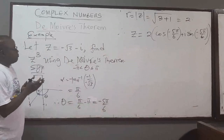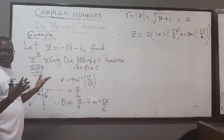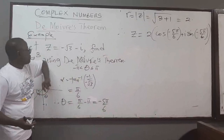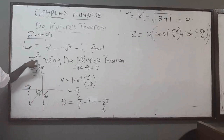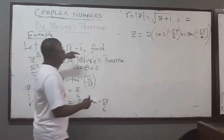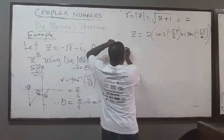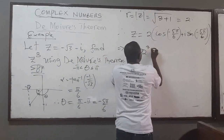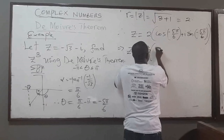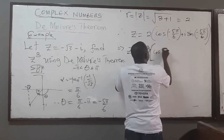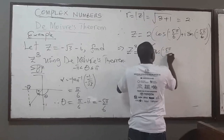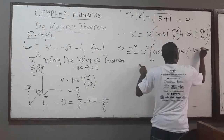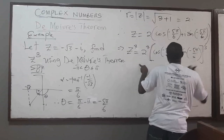We have the complex number in polar form. Now that it's in polar form, we can easily apply De Moivre's theorem to find z to the power 3. So z to the power 3 is 2 cubed times (cos(-5π/6) + i·sin(-5π/6)) raised to the power 3, which gives 8·(cos(-5π/2) + i·sin(-5π/2)).